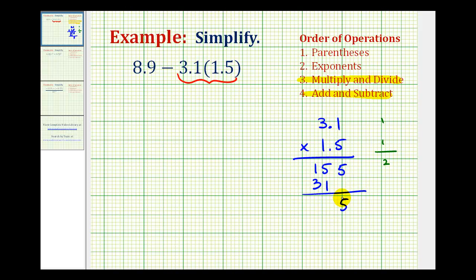Now we'll add. We have 5, 6, and 4. But remember we have to have two decimal places. So starting at the right, we'll move the decimal point over two places. 1, 2. So this product is 4.65.